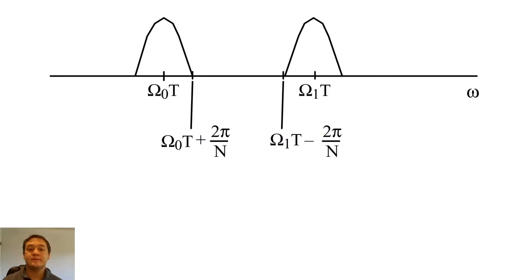In this lecture, we examine what restrictions are needed to differentiate or resolve two cosine functions in a single DFT. On this graph, we show the main lobes of one cosine function centered at omega-0 and one cosine function centered at omega-1.